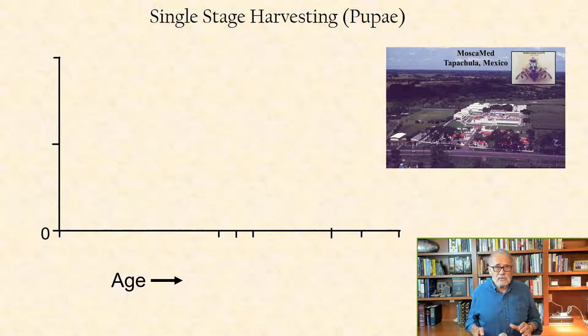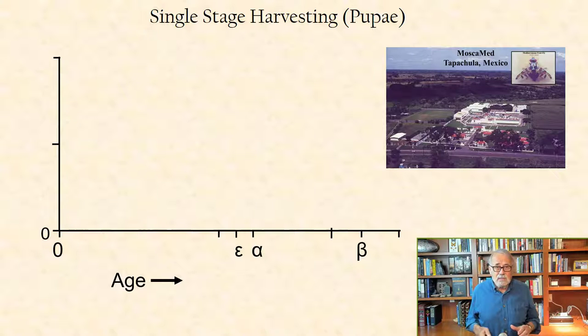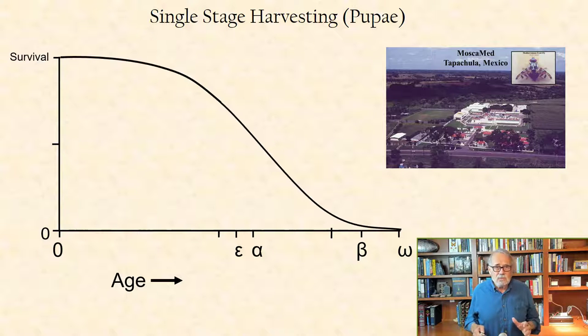With age on the x-axis starting at age zero, then age epsilon denoting the age of eclosion, age alpha denoting the age of first reproduction, age beta the age of last reproduction, and omega the oldest age, and survival and reproduction on the y-axis.